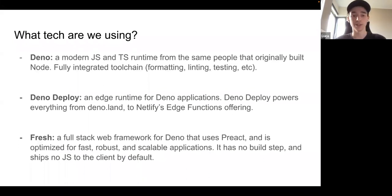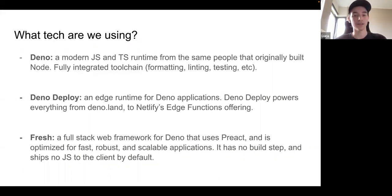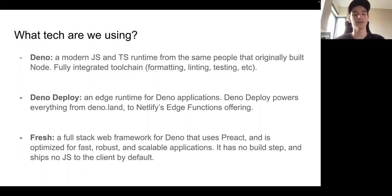Deno contains a fully integrated toolchain, which is different from Node. It has a built-in formatter, built-in linter, and built-in testing framework. It uses more modern JavaScript features like promises everywhere, and tries to stick to web APIs where possible. For example, there's no custom HTTP server or HTTP client — it uses fetch just like a browser would.